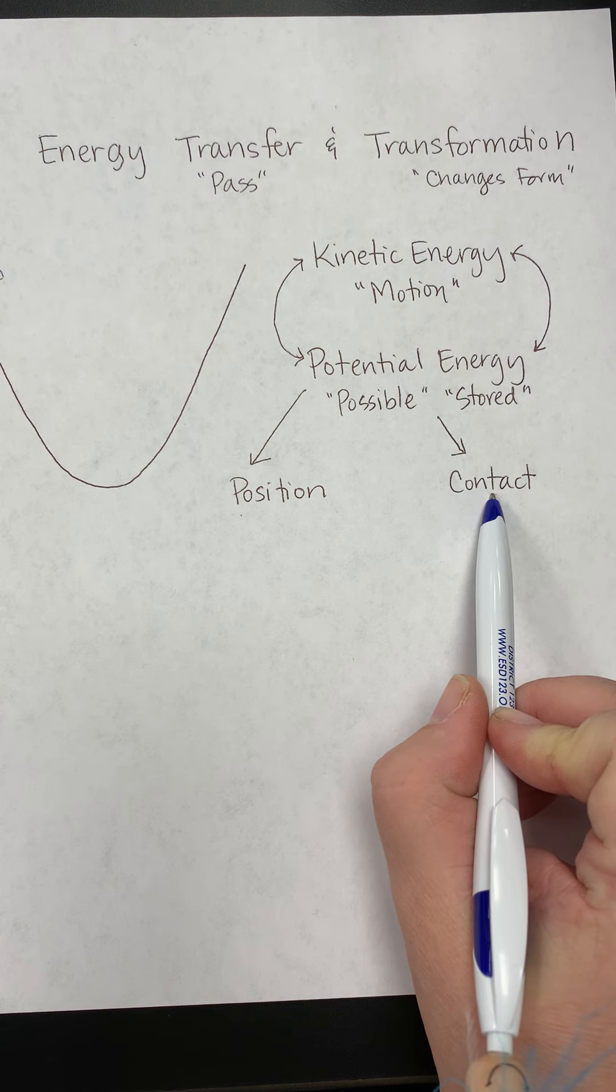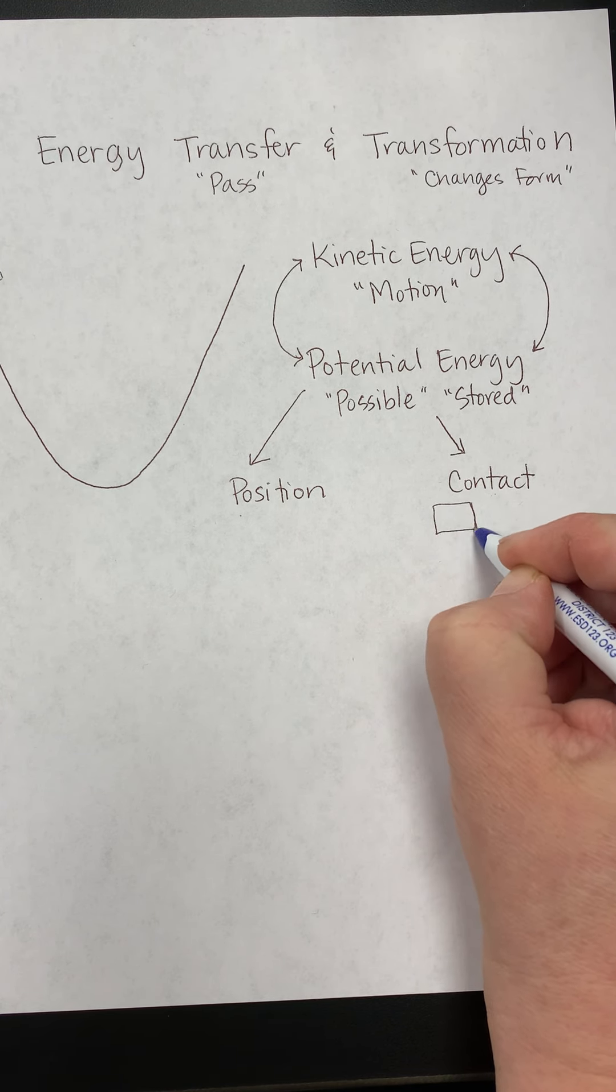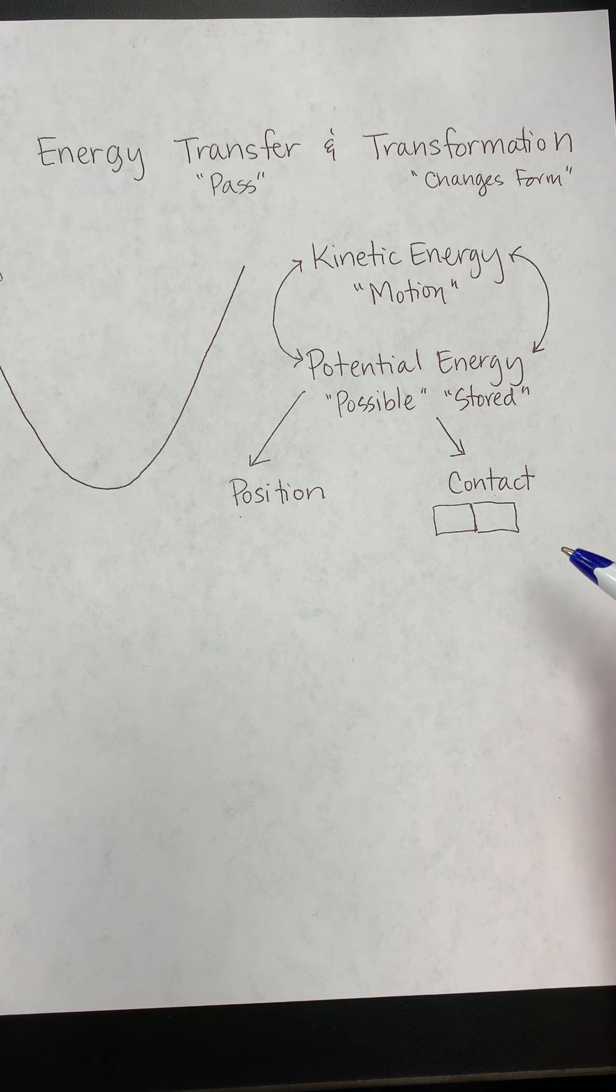Also, in contact, because we know that when two objects collide, at the moment of contact, there is no motion. That would mean, then, that at the moment of contact, it's all potential energy.